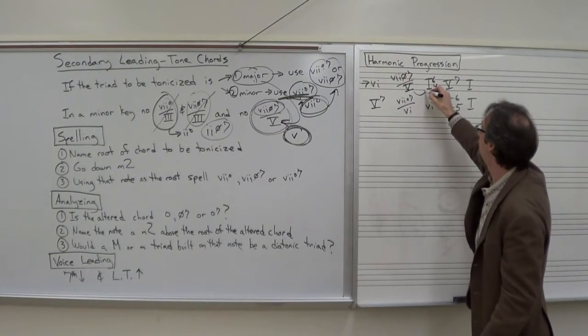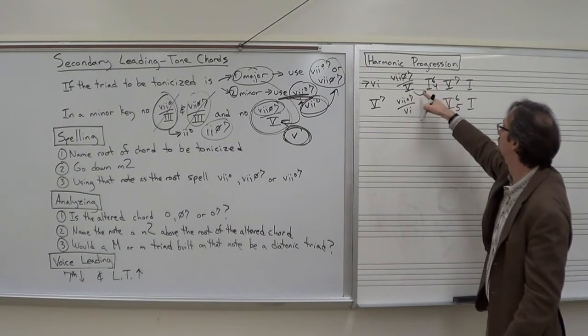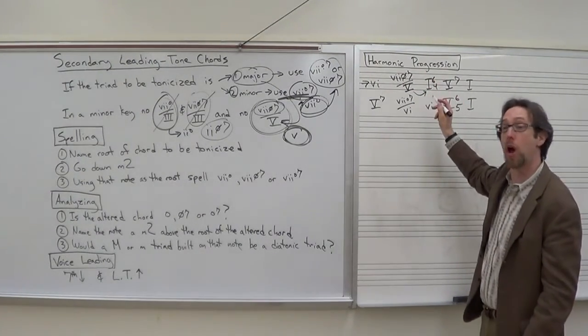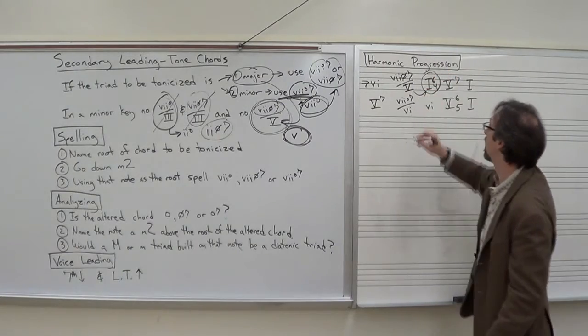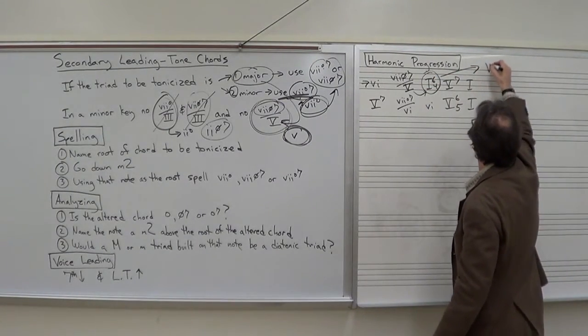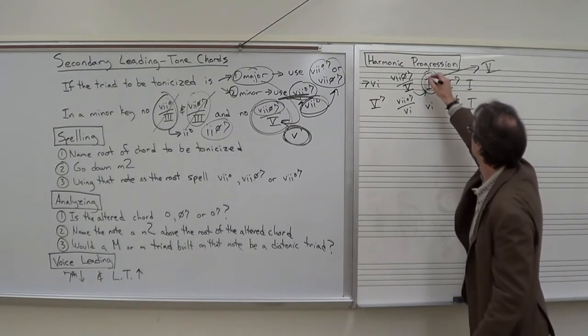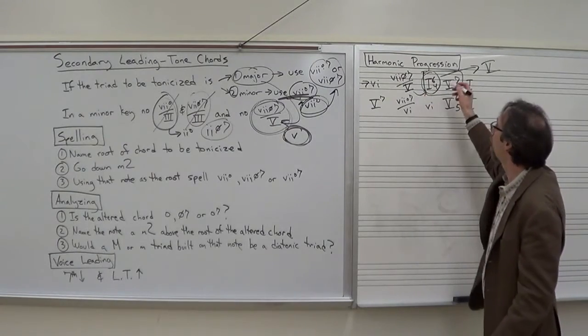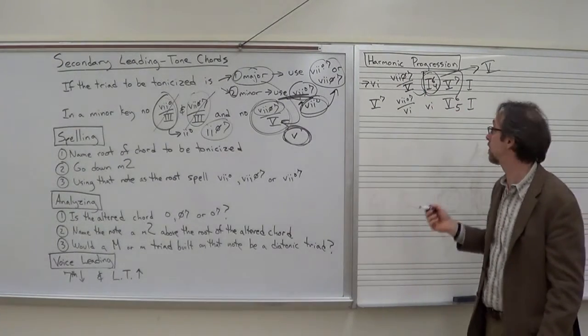Let's take a look. Here's one example at the top. 6 to 7 half diminished 7 of 5, 1-6-4, 5-7, 1. Is there any problem when this 7 half diminished 7 of 5 doesn't go immediately to 5? No, because a 1-6-4 chord in this context here is functioning as a 5 chord. This 1-6-4-5-7 is really all one dominant function. So we really are going to 5 just as we expect.